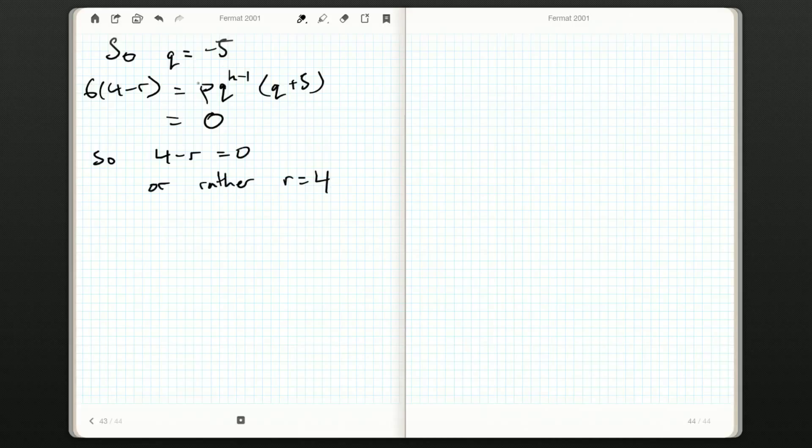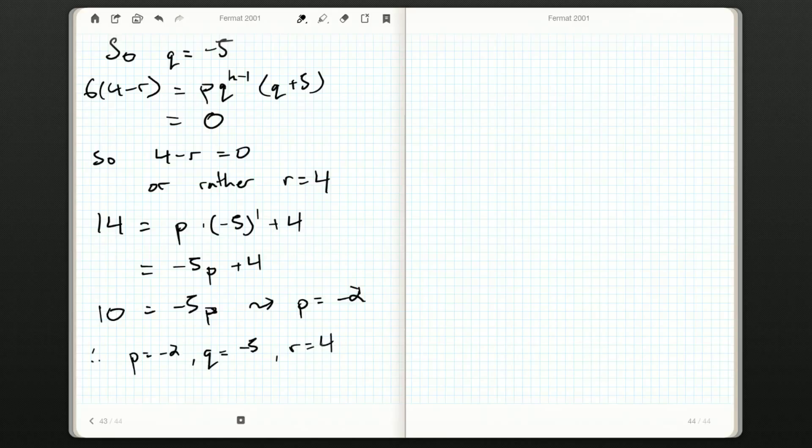Okay. And now, I've got q, I've got r, and I want p. Well, I know that 14 is equal to p times negative 5 to the 1 plus 4. So, that's negative 5p plus 4. 10 is going to be equal to negative 5p. We're just subtracting off 4 from both sides. So, p is going to be negative 2. p is negative 2, q is negative 5, and r is 4.